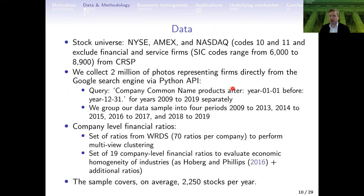Our data universe is quite standard — we take stocks from CRSP. One important thing: we exclude financials and services because their photos do not represent products offered by companies. For services, typical photo representations would be people doing something, so when identifying objects we would mainly get people rather than what those people actually produce. We use photos from Google and collect a representation of 2 million photos, using the query: company name, then 'products' as a phrase, then the time period. For each period we collect 100 photos, covering years from 2009 to 2019.